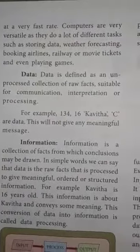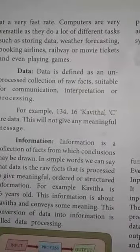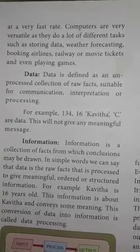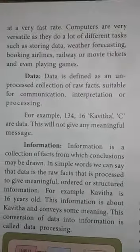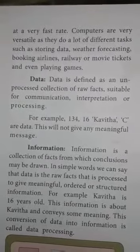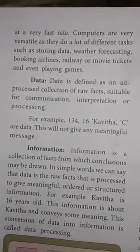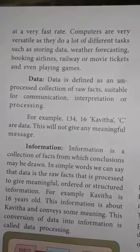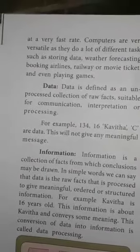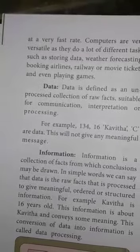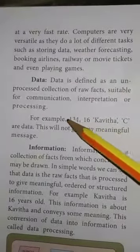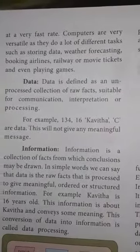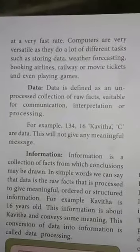The next concept is data and information. There is a small difference between the two terms. A computer is an electronic device basically used to calculate and process. Data is an unprocessed collection of raw facts. Specifically, data is defined as an unprocessed collection of raw packets — one complete structure that is suitable for communication, interpretation, or processing.